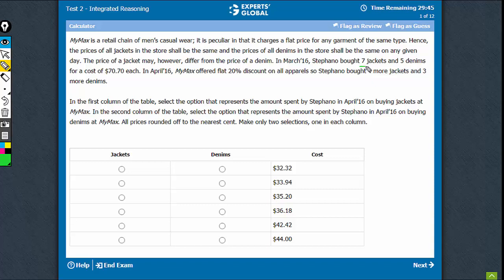The 7 jackets came for $70.70, so the cost of jackets was $10.10 and cost of denims $70.70. So this would be $14.14.